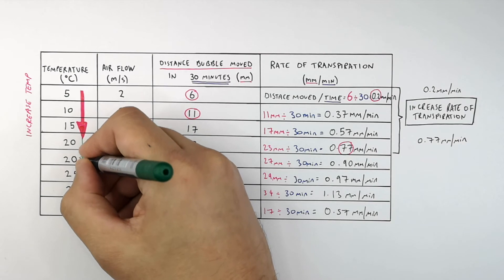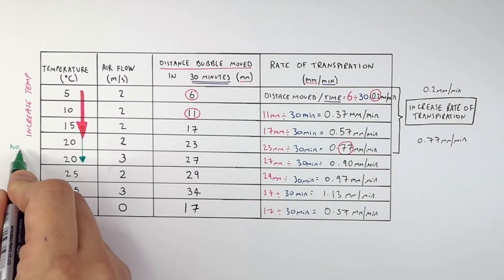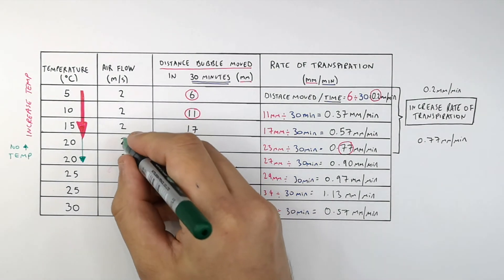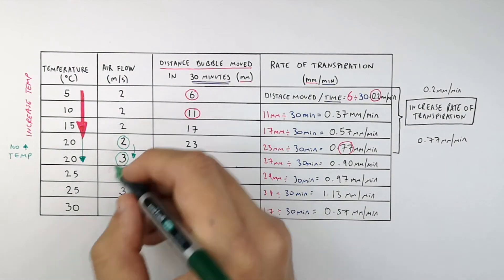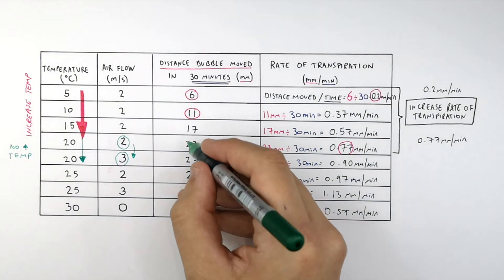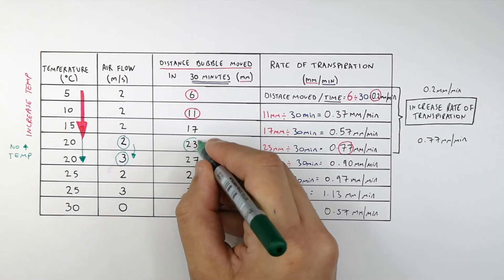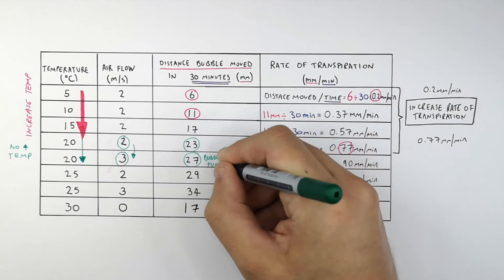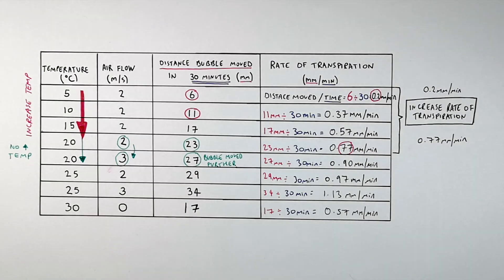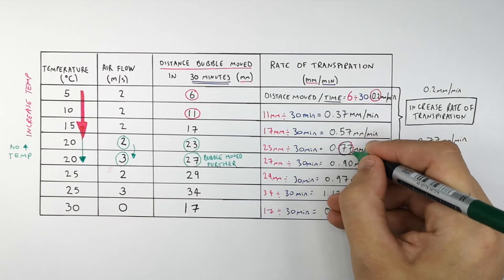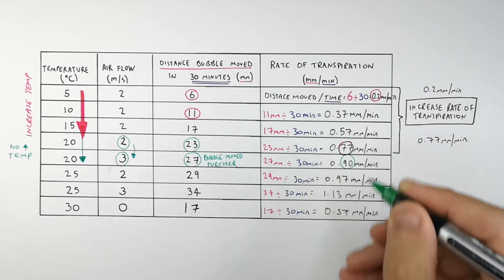The next change in independent variable kept temperature constant at 20°C but increased the airflow from 2 meters per second to 3 meters per second. This saw an increase in the distance the bubble moved in 30 minutes from 23 millimeters to 27 millimeters. The rate of transpiration increased from 0.77 millimeters per minute to 0.9 millimeters per minute.